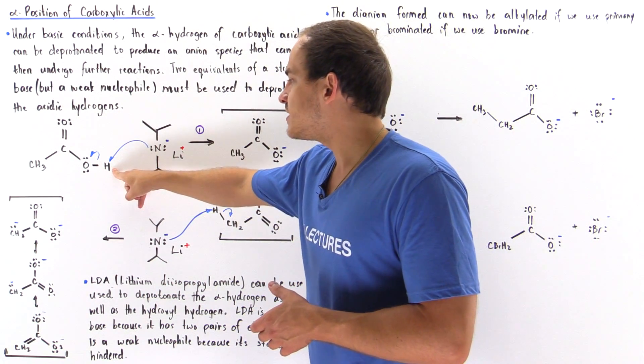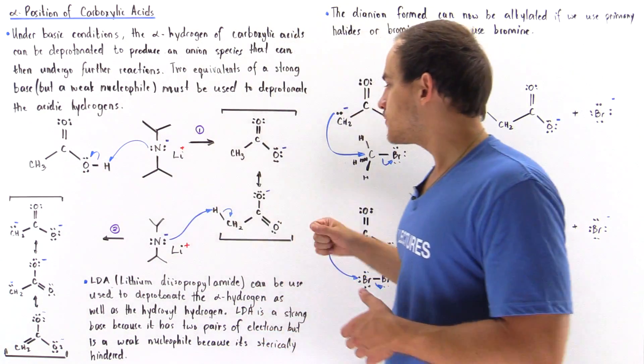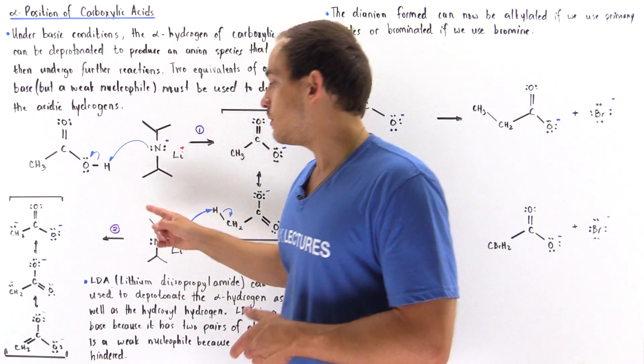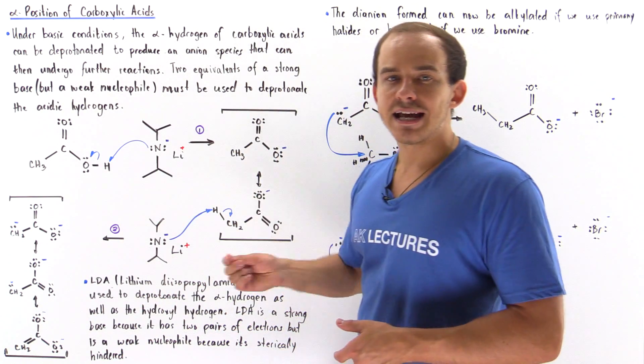So this H is more acidic, so it's deprotonated first. This H is a little bit less acidic, so it's deprotonated second, and we form this di-anion.